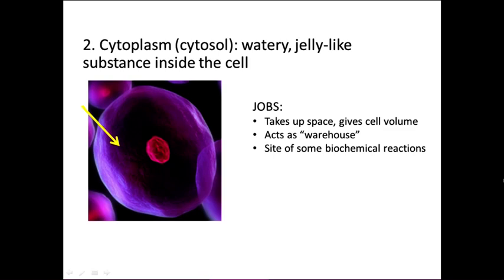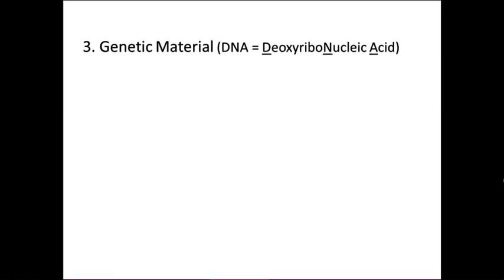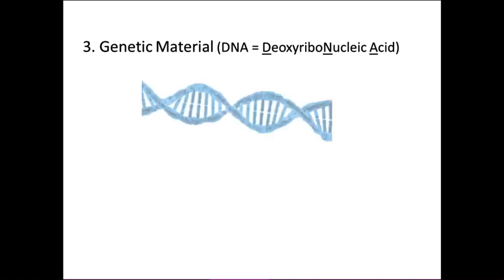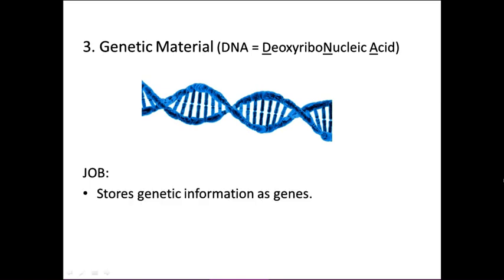In eukaryotic cells, some biochemical reactions occur inside the organelles. Next we have the genetic material, which is DNA — deoxyribonucleic acid. DNA stores genetic information as genes. We're going to learn a lot about DNA later this quarter. DNA is really important because it directs cellular processes. Without the DNA, the cell doesn't know what to do, and it dies.